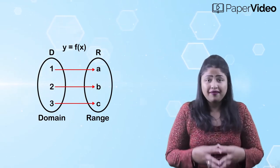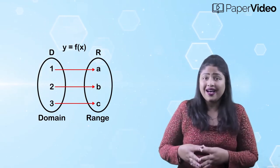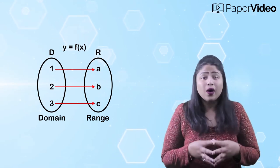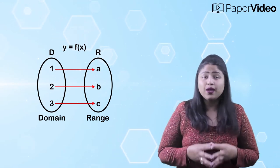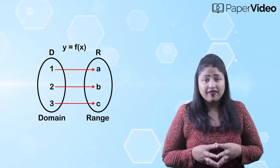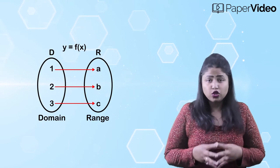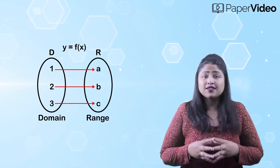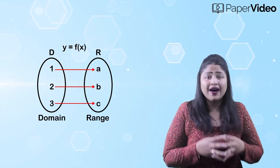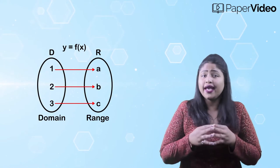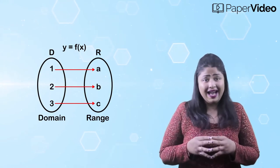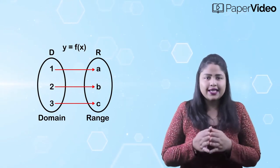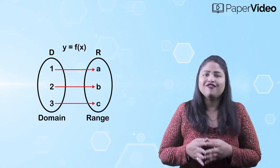And if under the same domain and range, for every value of y in the range R, there corresponds one and only one value of x in the domain D, then we say that the inverse function of y equals f of x exists and is given by x equals g of y.